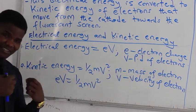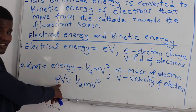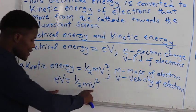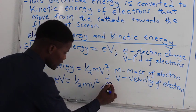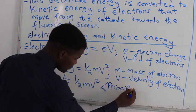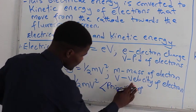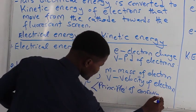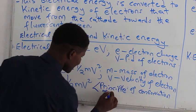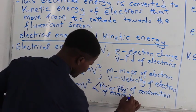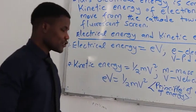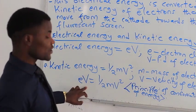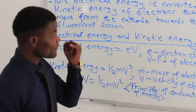By the principle of conservation of energy, electrical energy must equal kinetic energy. This equation — eV = ½mv² — is true because you cannot destroy energy and you cannot create energy; you can only transform it from one form to another. So the electrical energy eV is the same as the kinetic energy ½mv².